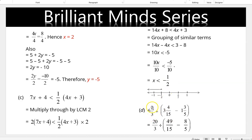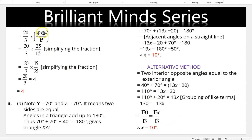This is a fraction problem. Convert all mixed numbers into improper fractions. After converting, simplify what is in parentheses to get 20/3 ÷ 25/15. Since this is division, reciprocate 25/15 to get 15/25 and change to multiplication. Simplifying gives the final answer of 4.